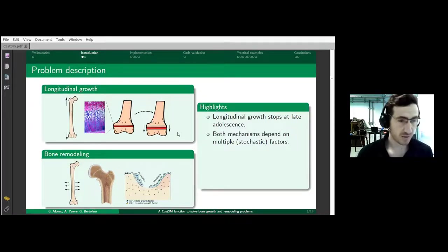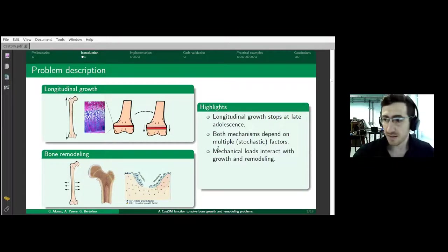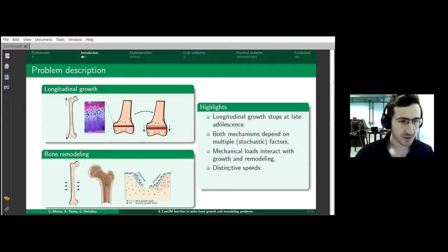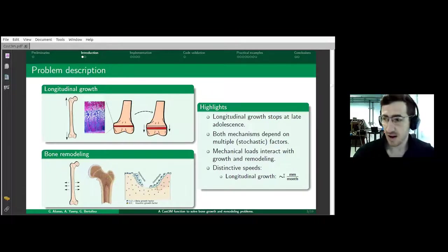These two mechanisms depend on multiple and stochastic factors, so we cannot deterministically compute them, though we can have a good estimate. Both mechanisms are mediated through mechanical loads and have different speeds. Longitudinal growth happens at about a millimeter per month, while remodeling changes bone geometry at micrometers per month.